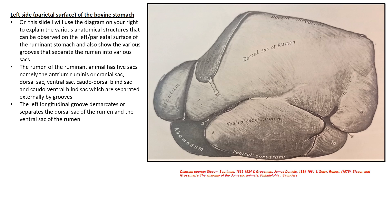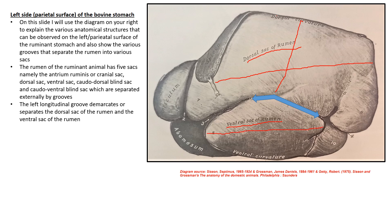The left longitudinal groove demarcates the dorsal sac and the ventral sac of the rumen. The arrow shown indicates this demarcation. The dorsal sac is quite extensive — it extends cranially all the way to the demarcation point at the left longitudinal groove, starting from the dorsal curvature. The ventral sac extends from the cranial point going caudally to that same point, and from the dorsal end going ventrally to the ventral curvature. So from outside, the left longitudinal groove appears to divide the dorsal sac from the ventral sac of the rumen.